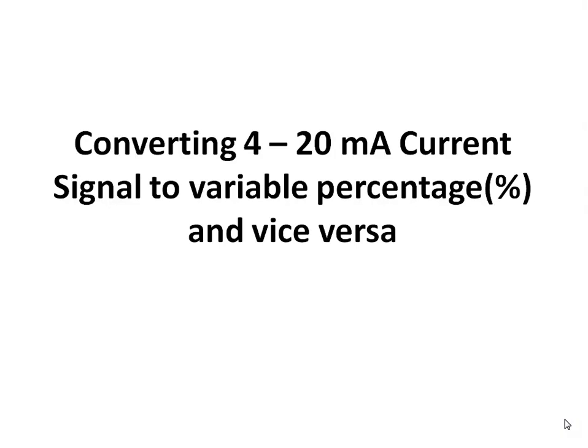In this video I will discuss how to convert 4 to 20 mA current signal to variable percentage and vice versa. The variable percentage may be a process variable percentage or a manipulating variable percentage.